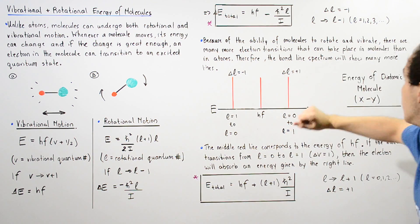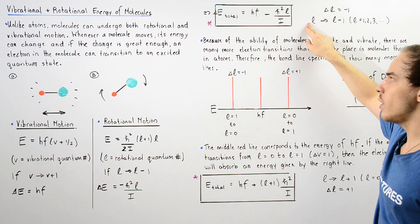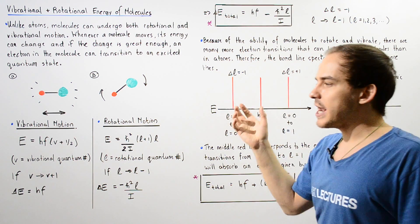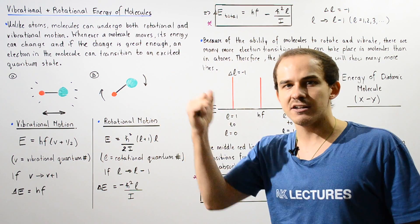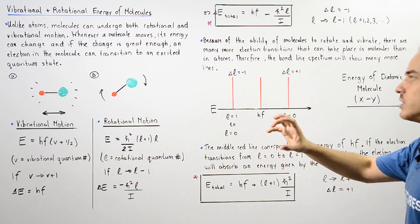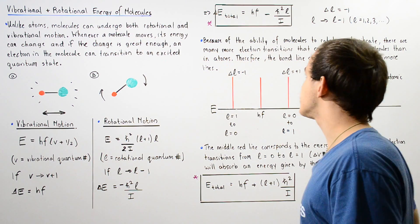where L in this case is a number that begins with 1 and goes to 2 to 3 to 4 and so on. So this is our equation that gives us the change in energy of our molecule. And if the change is great enough, the electron can actually gain that energy and transition from a lower to a higher state.